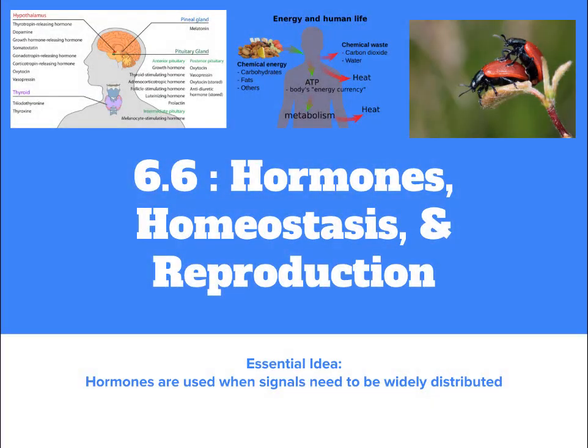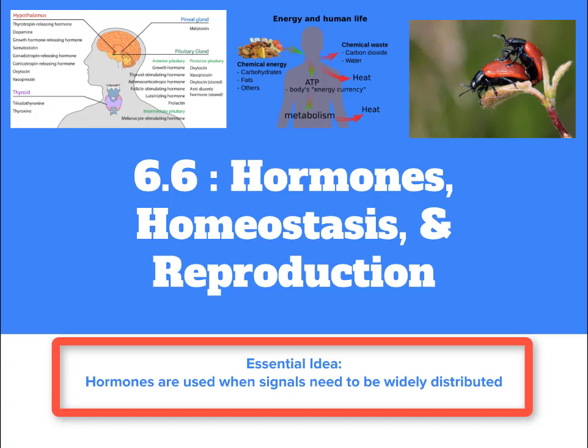In our last unit, you learned that our neurons are responsible for sending electrical impulses through our bodies. However, neurons are not the only way our bodies send messages around. For this, our bodies use hormones. Hormones are messengers, but in the chemical form. They don't send signals quite as fast as our nervous system, but they still get the job done and they have a massive influence on pretty much every cell in our body. As the essential idea here states, hormones are used when signals need to be widely distributed.